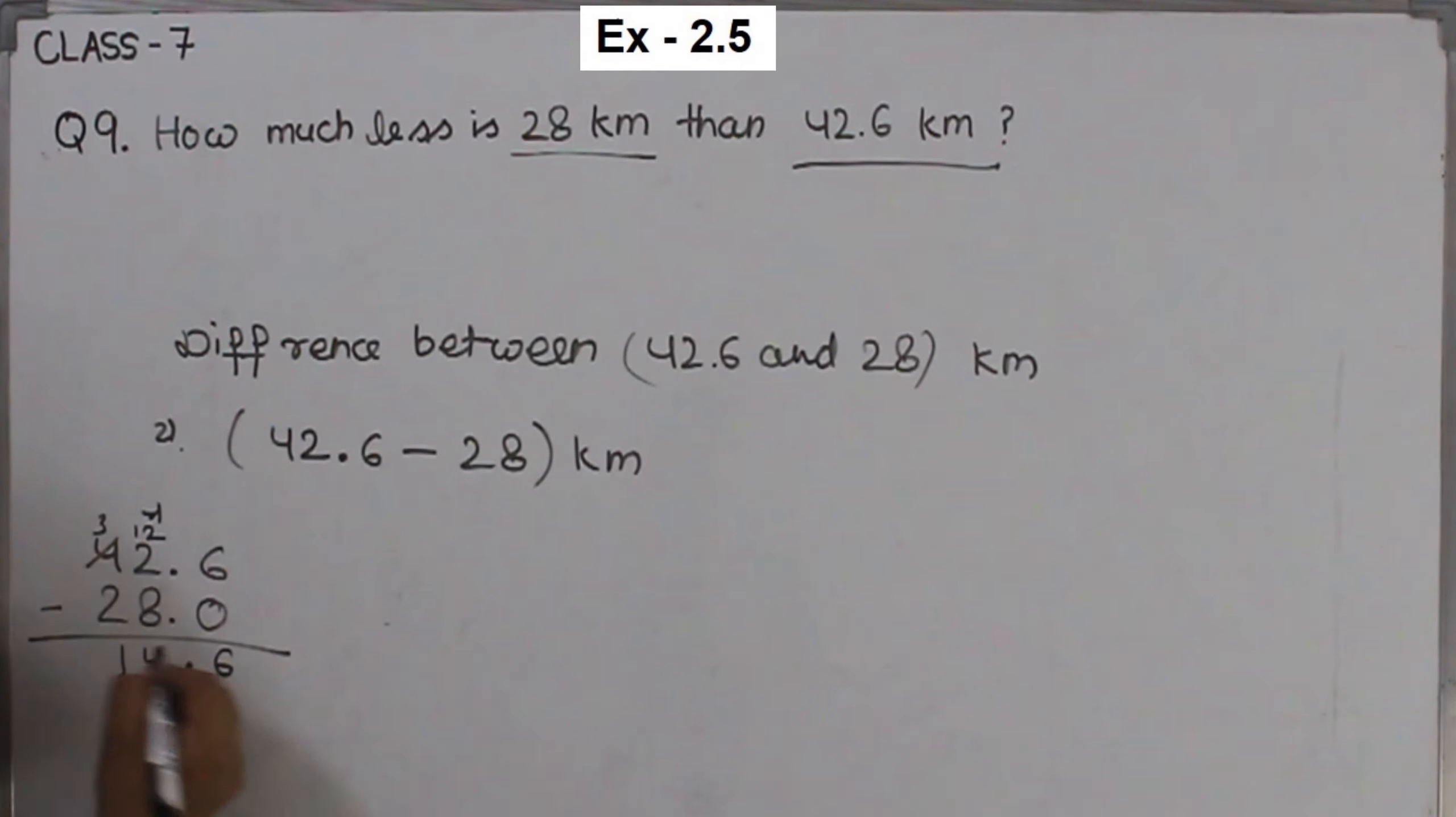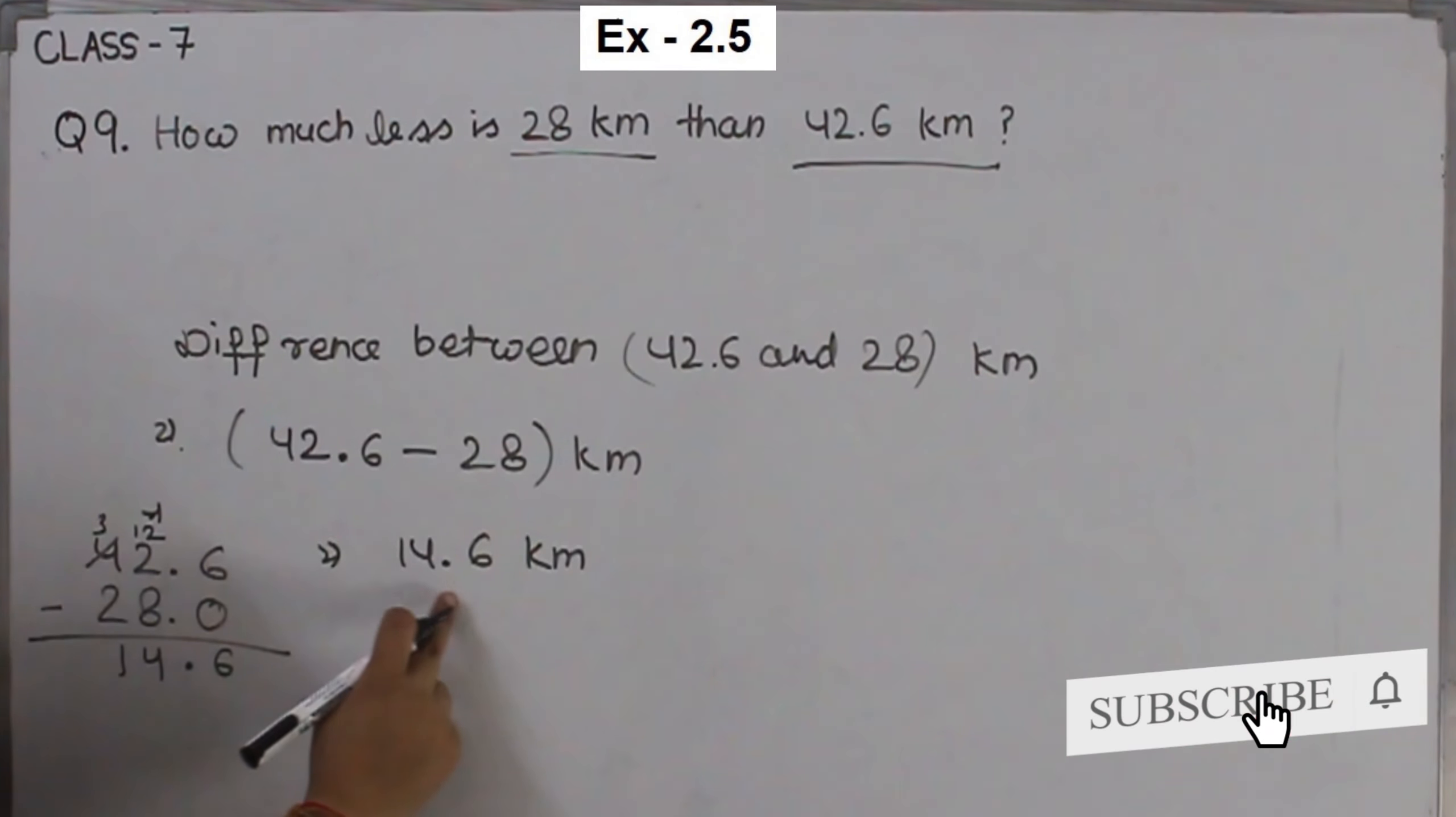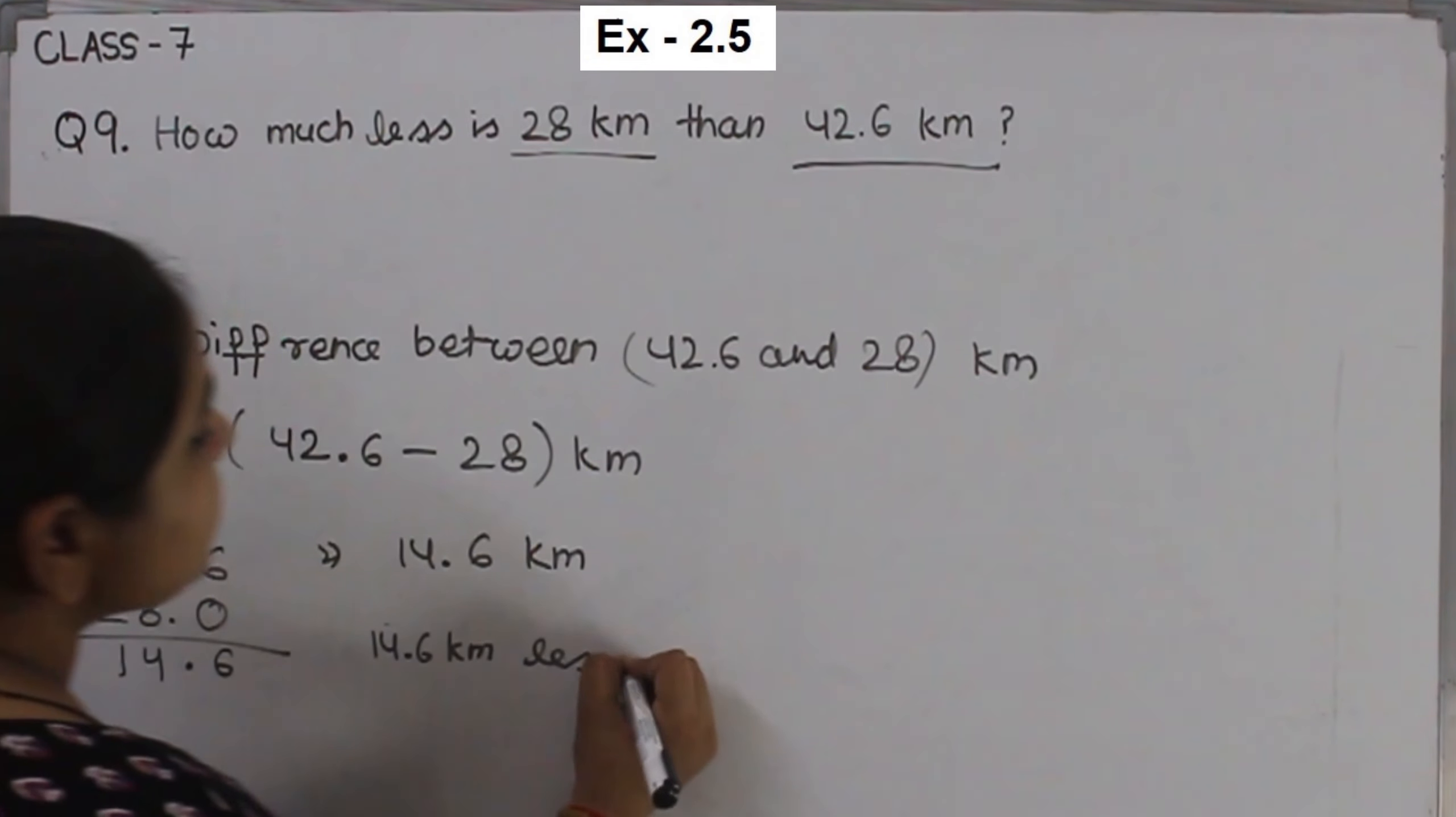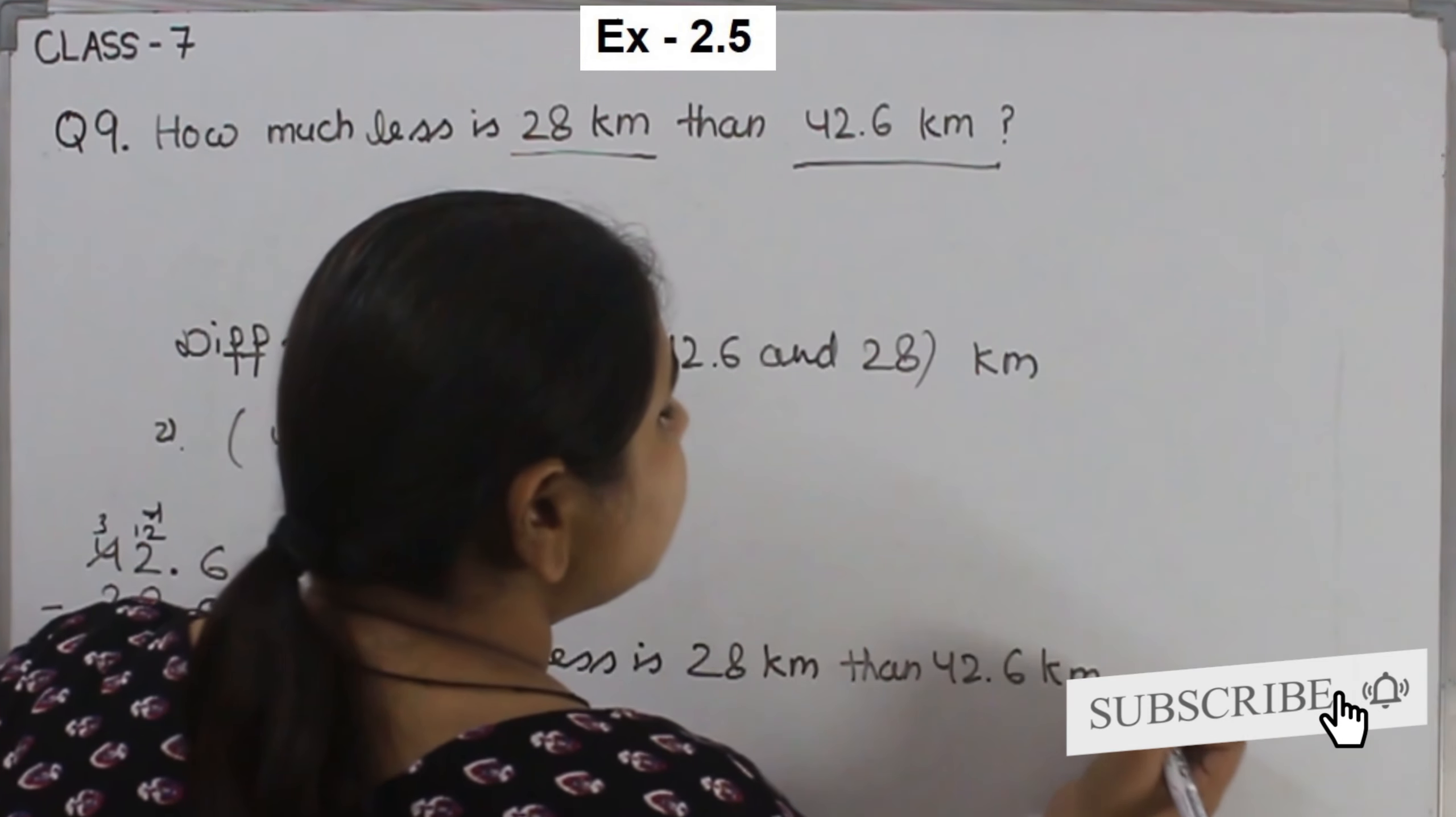And 3 minus 2 is equal to 1. So the answer is 14.6 km. So 28 km is 14.6 km less than 42.6 km. We will write this statement: 14.6 km less is 28 km than 42.6 km.